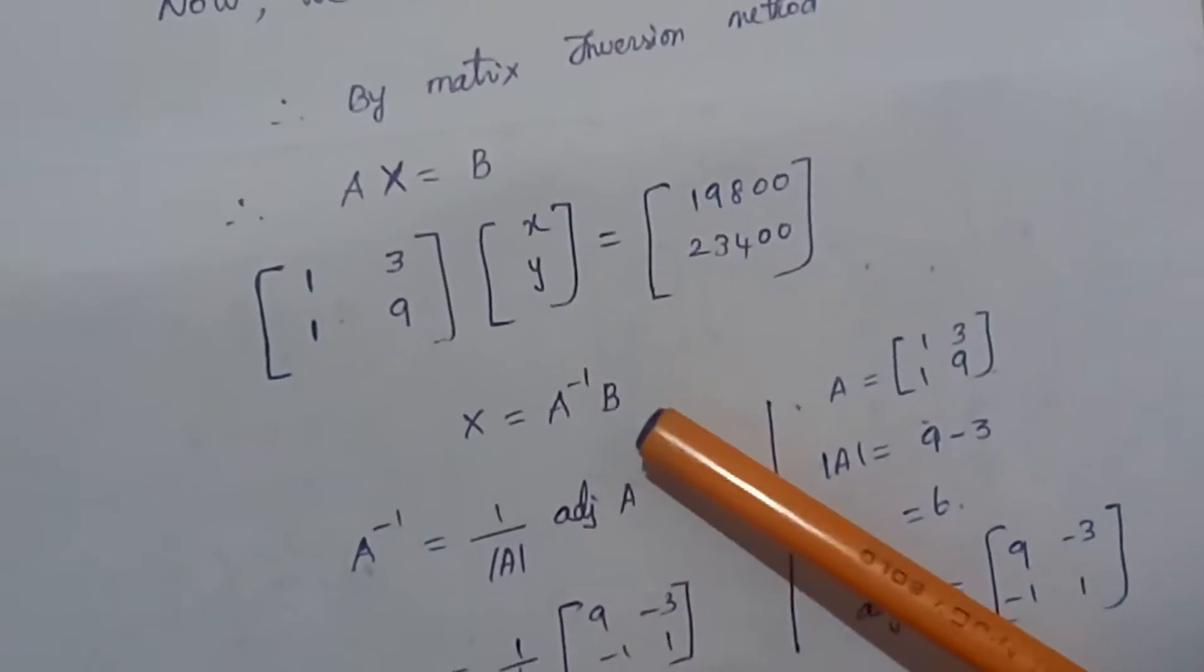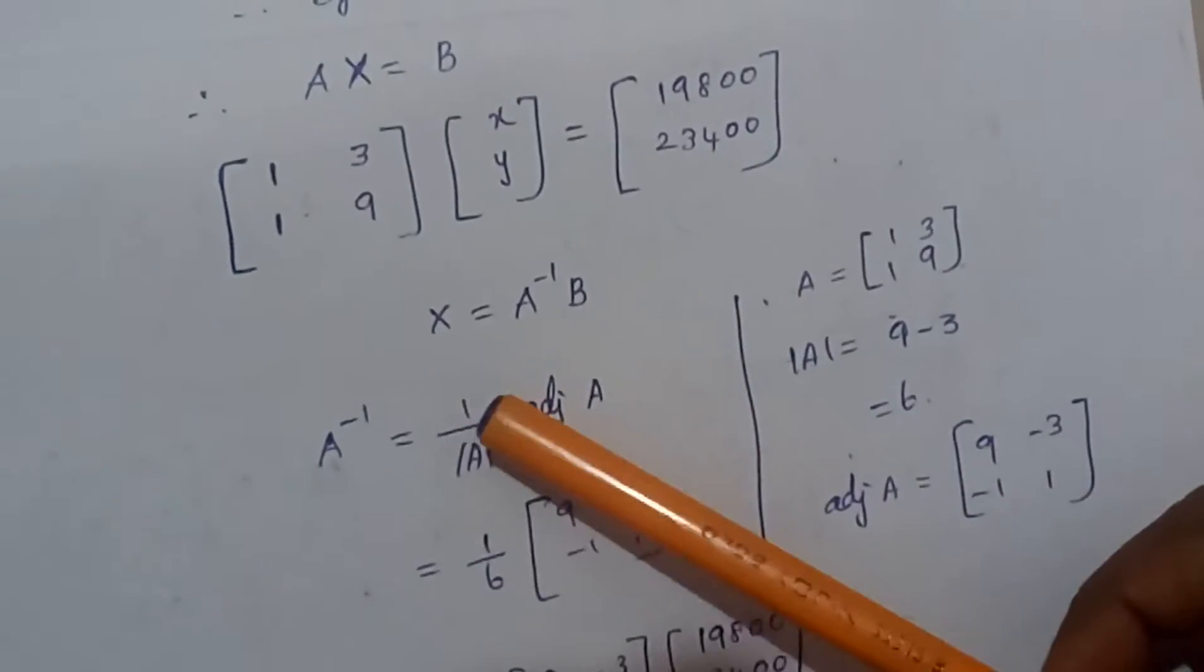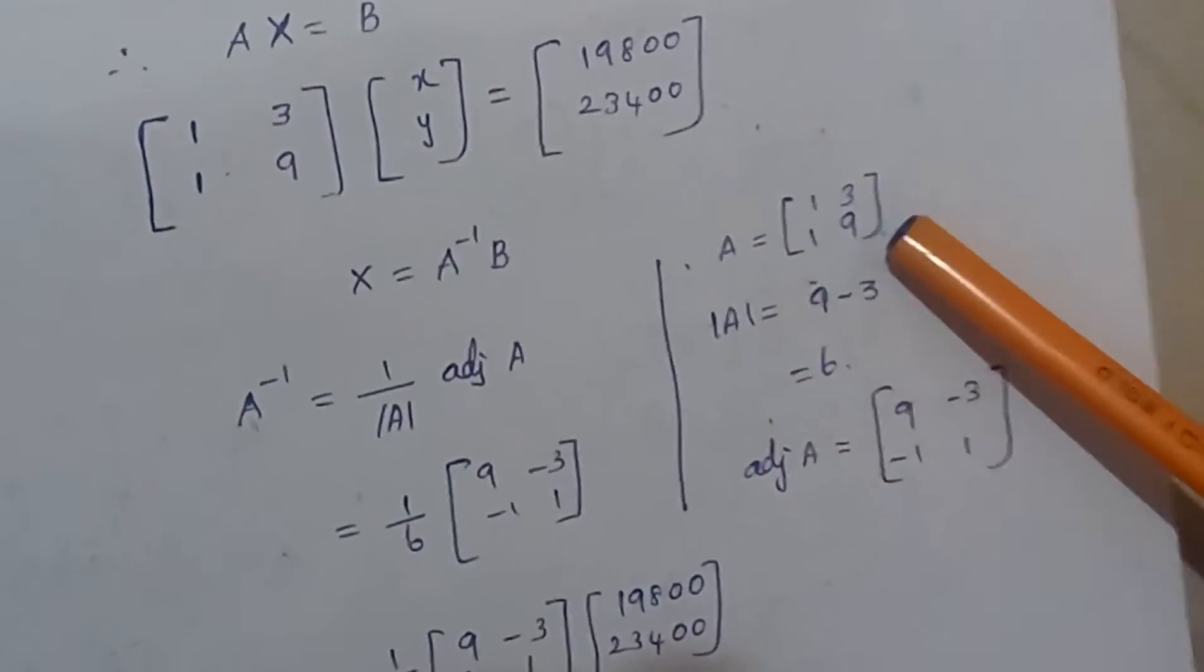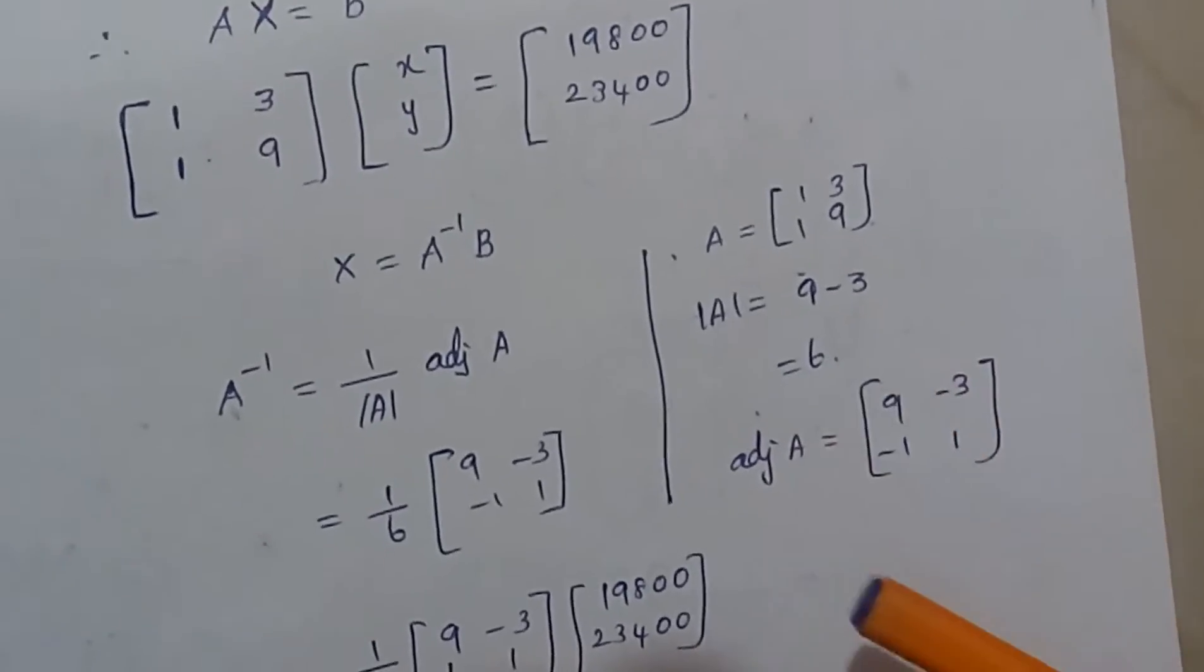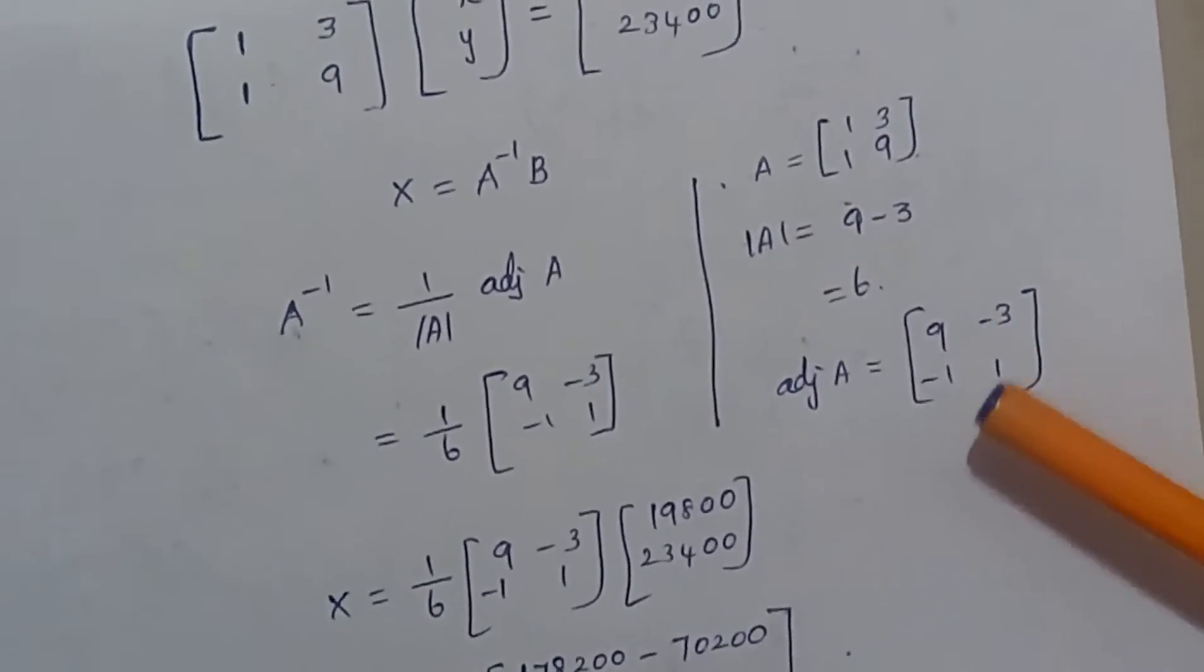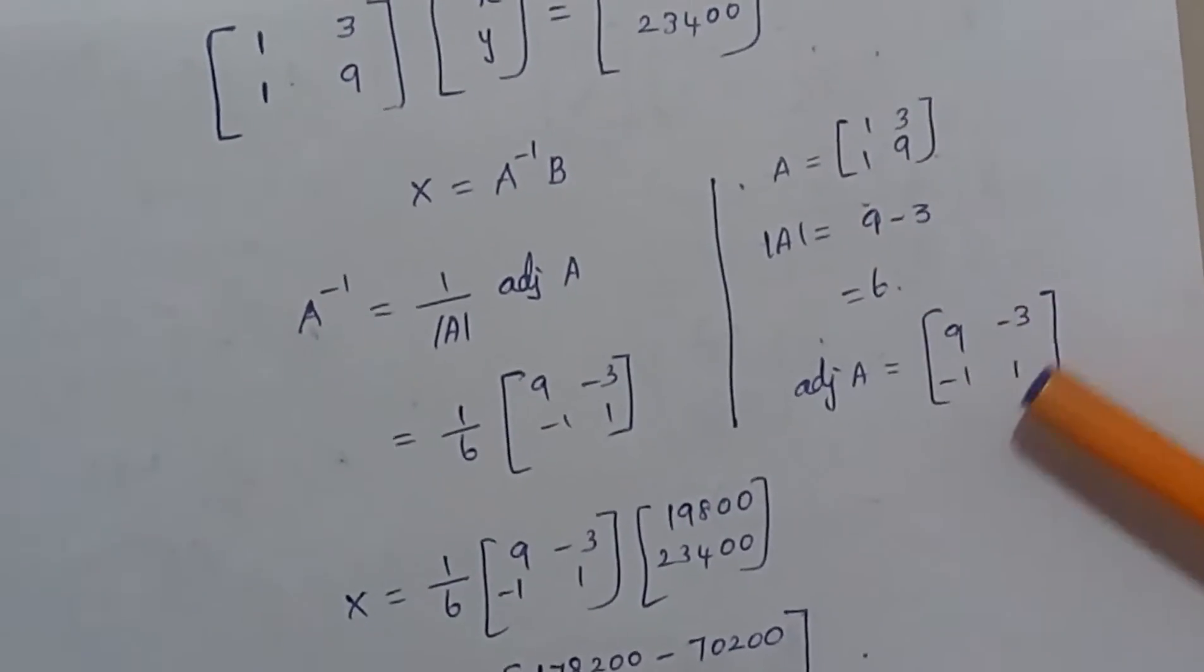X equals A inverse times B. A inverse equals 1 by determinant of A into adjoint A. Determinant A equals 9 minus 3 equals 6. Adjoint A: interchange A11 and A22, and change the sign of A12 and A21.